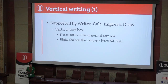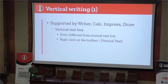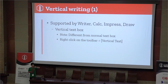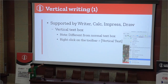Vertical writing functionality is supported by Writer, Calc, Impress, and Draw via a vertical text box. The vertical text box is a different function from a regular text box — that's an important point. You can create it from the menu or toolbar by right-clicking the toolbar and choosing vertical text.